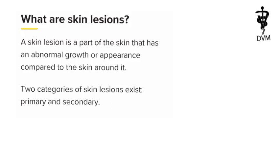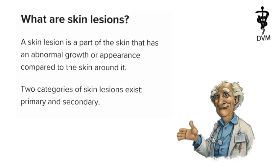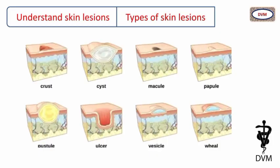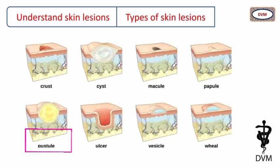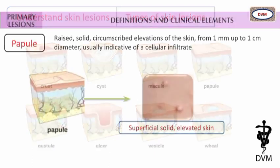What are lesions of skin? Any part of skin that has abnormal growth or appearance compared to skin around it. There are different types of skin lesions, like papule, crusts, pustule, nodule, etc. In this video, we will discuss different types of lesions.